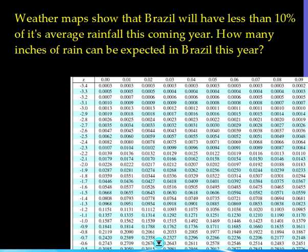All right, and then we'll do one last problem here when we work from the inside out. So weather maps show that Brazil will have less than 10 percent of its average rainfall this coming year. How many inches of rain can be expected in Brazil? So all the data is remaining the same. Standard deviation is 7.5, and the average is 50. And notice this is asking how much rain can we expect? So we're asked to solve for x in this case.